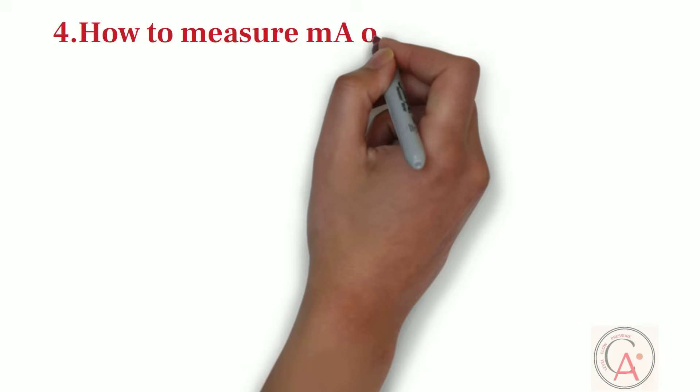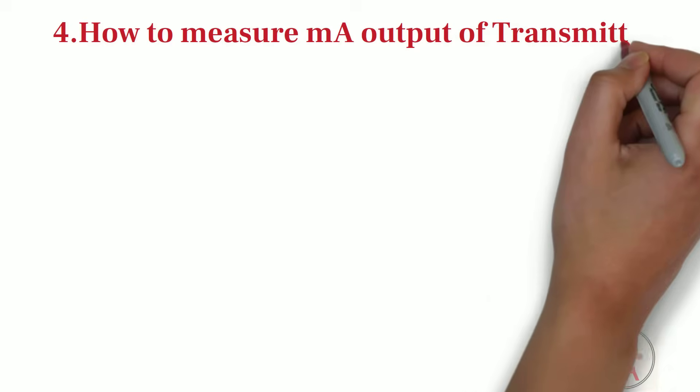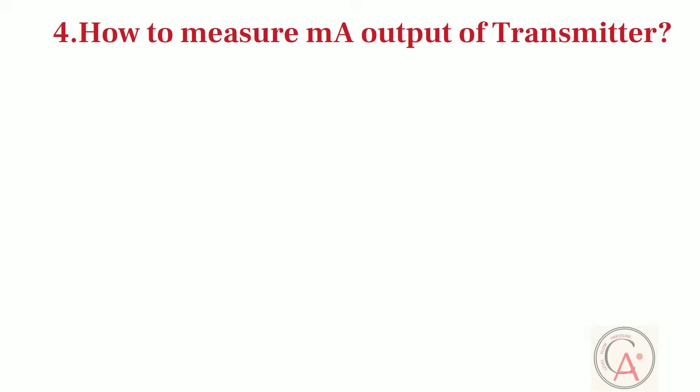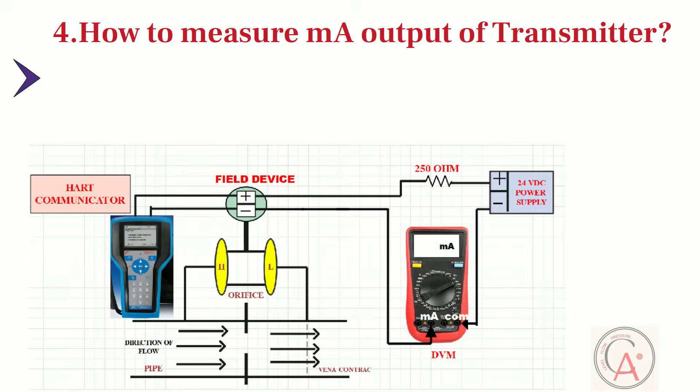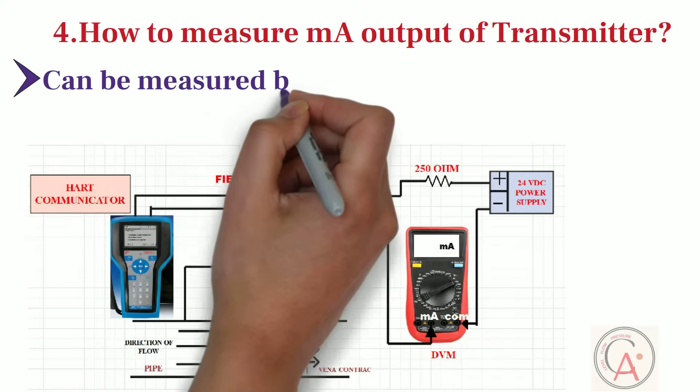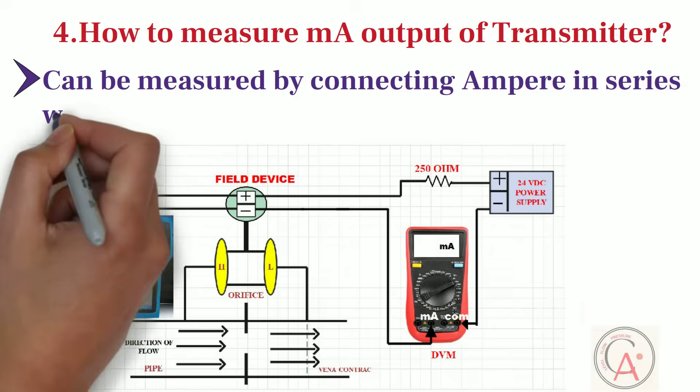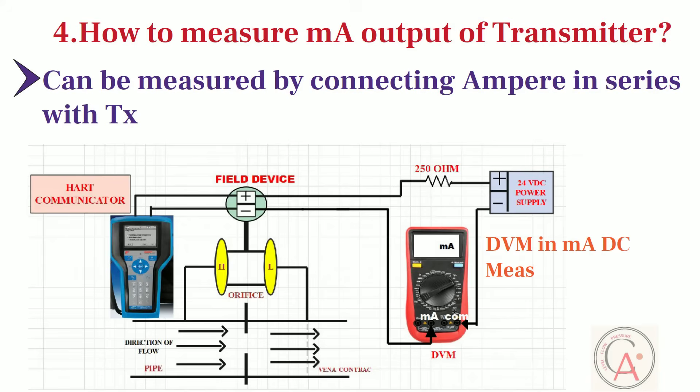Fourth common type of question is, how to measure milliampere output of transmitter. Milliampere output of transmitter can be measured by connecting multimeter in series with transmitter and putting multimeter in DC milliampere measuring mode.